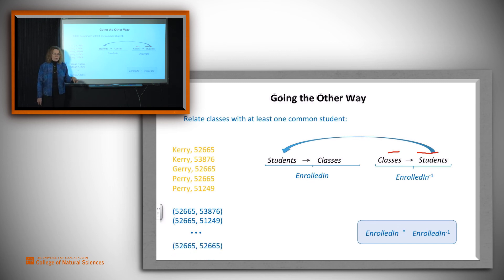And again, just to remind ourselves, since 52665 relates to Cary and Cary relates to 52665, we will get all of these elements where a class relates to itself.